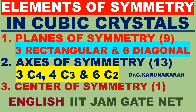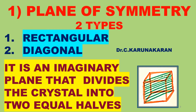In plane of symmetry, there are three rectangular planes of symmetry and six diagonal planes of symmetry. There are two types of plane of symmetry present in crystal systems: the rectangular plane of symmetry and the diagonal plane of symmetry.